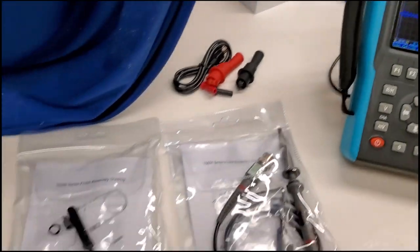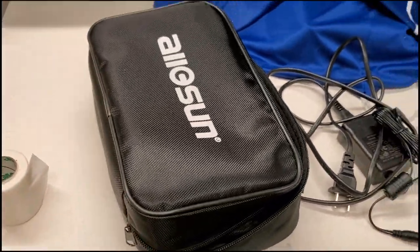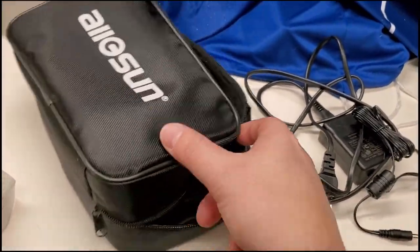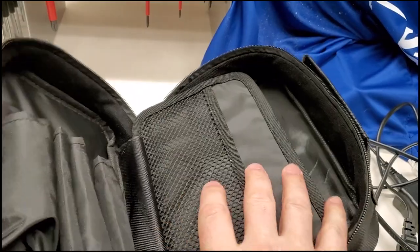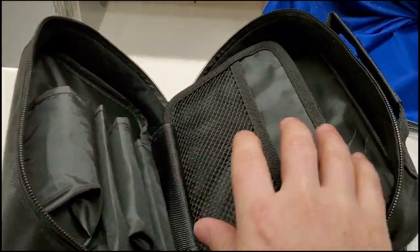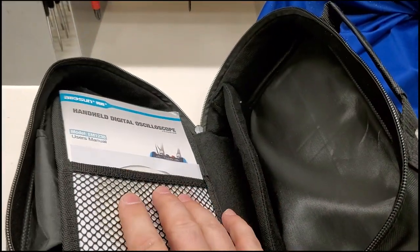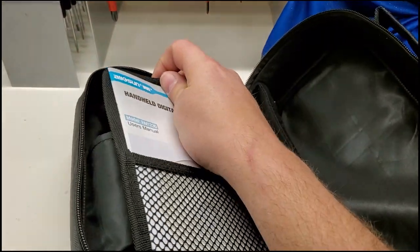So what comes in the box? Right here, you have the Allosun case. It's pretty neat. It's sectioned off so that you have spots for your leads and different connectors. Your meter fits back there. You've got software, and you've got a very nice manual.